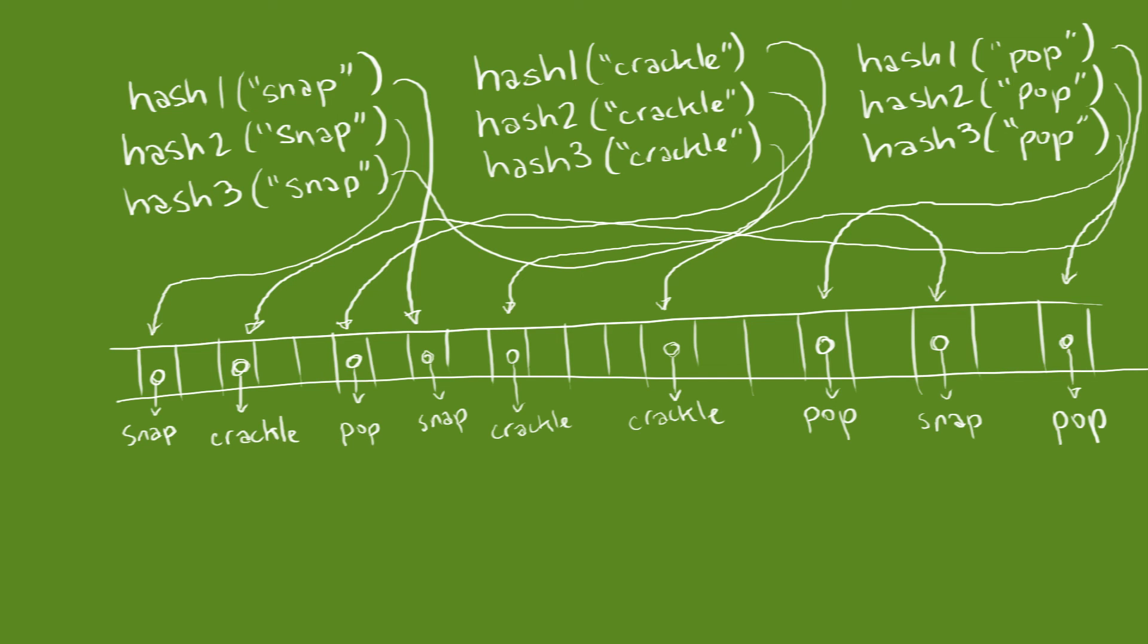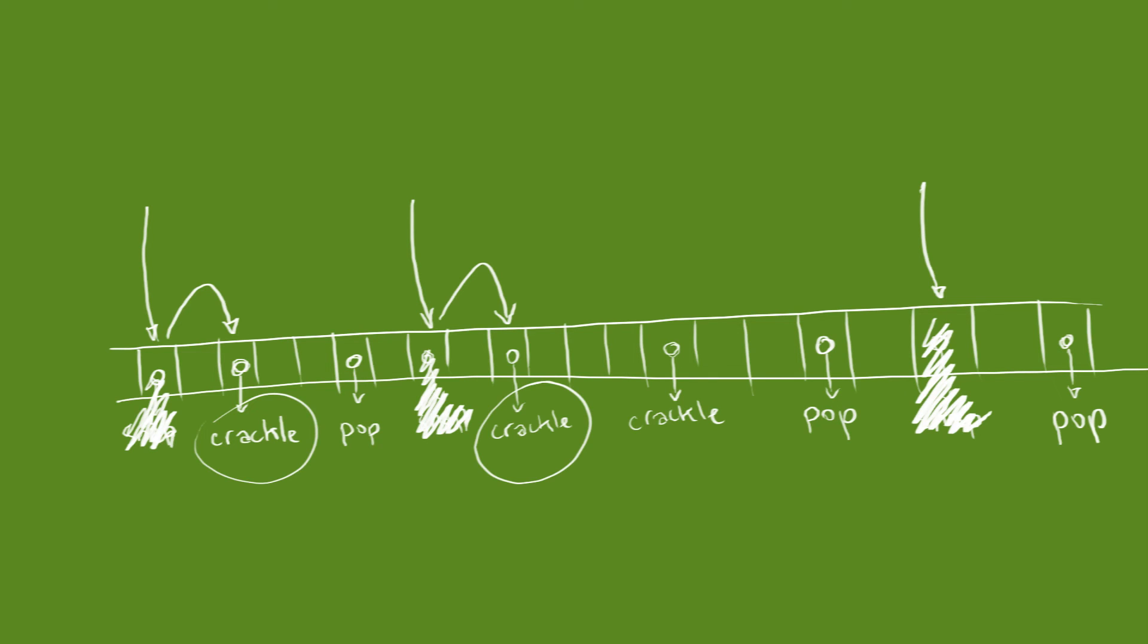Which means that should we remove snap, about half of our new keys should go to crackle, and the other half should go to pop.